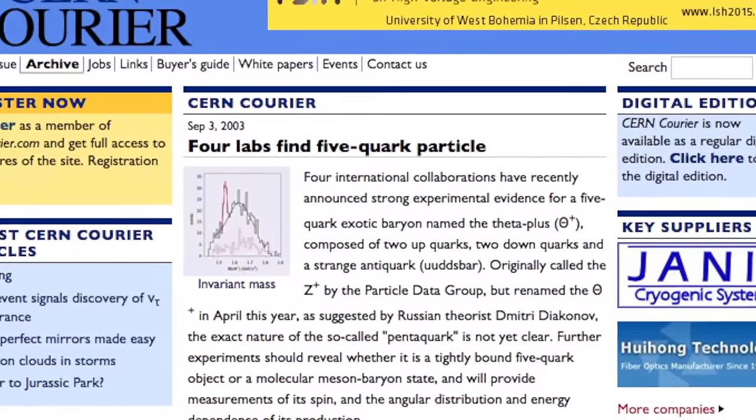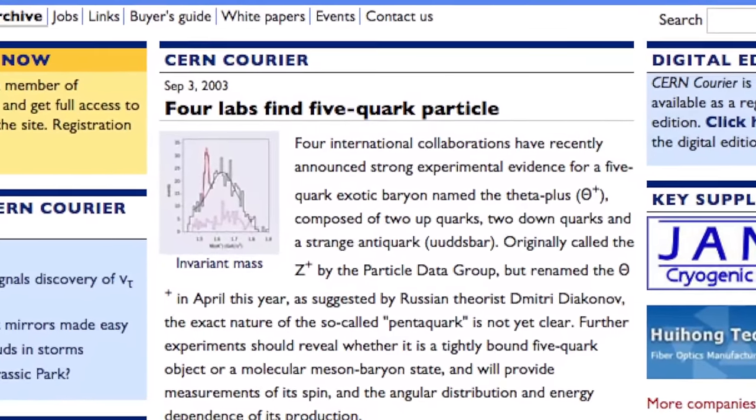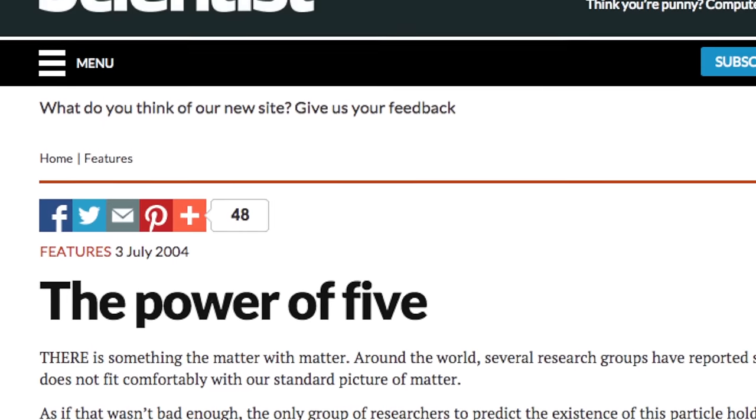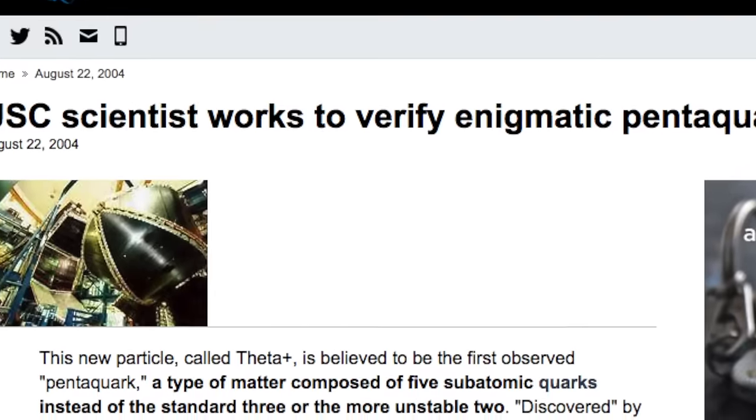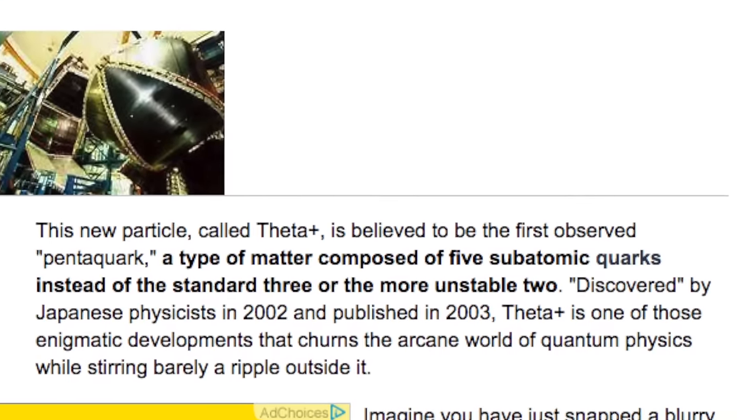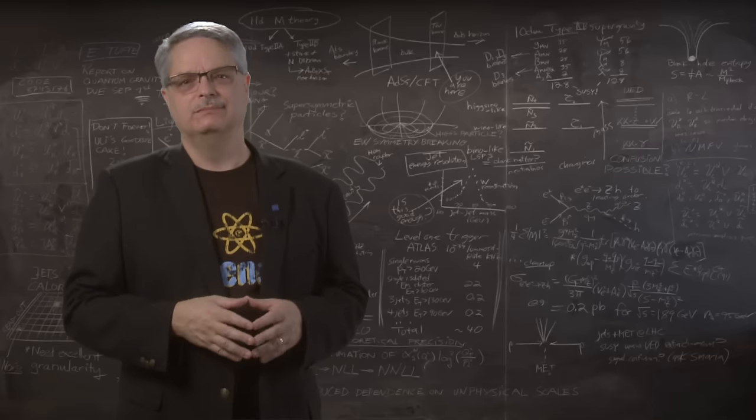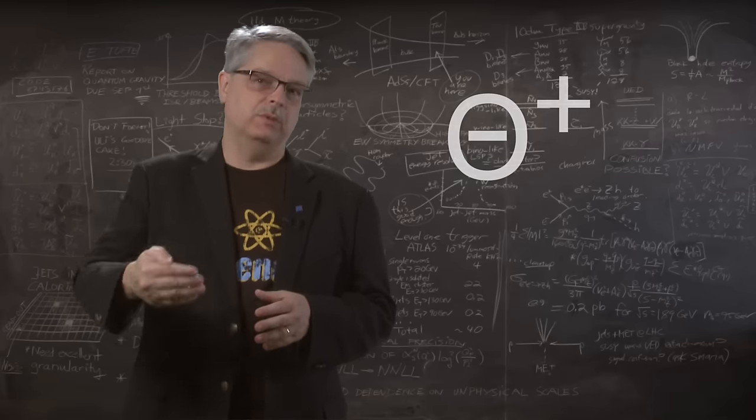Claims of the discovery of pentaquarks have surfaced before. For instance, in 2002 scientists claimed that they'd found a pentaquark consisting of two up quarks, two down quarks, and a strange antiquark. They called this particle a theta plus.